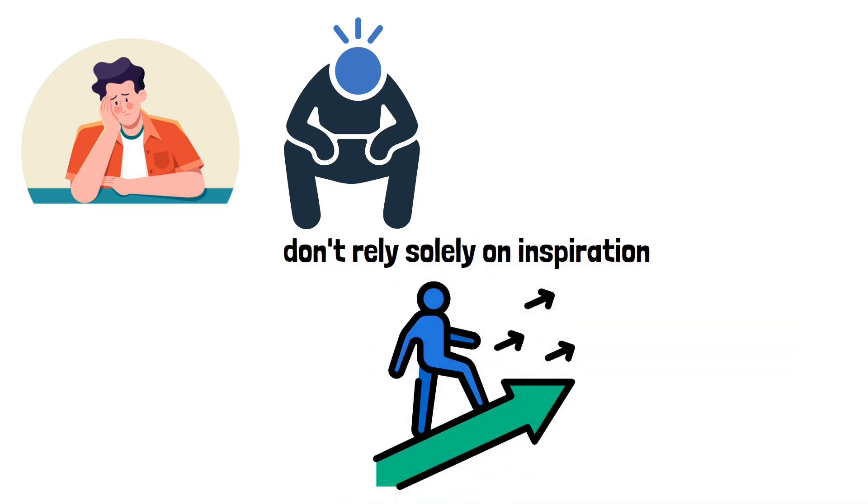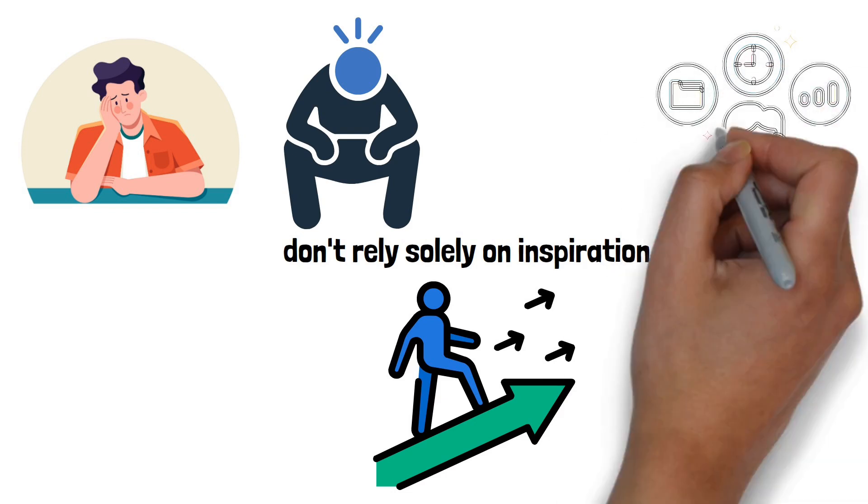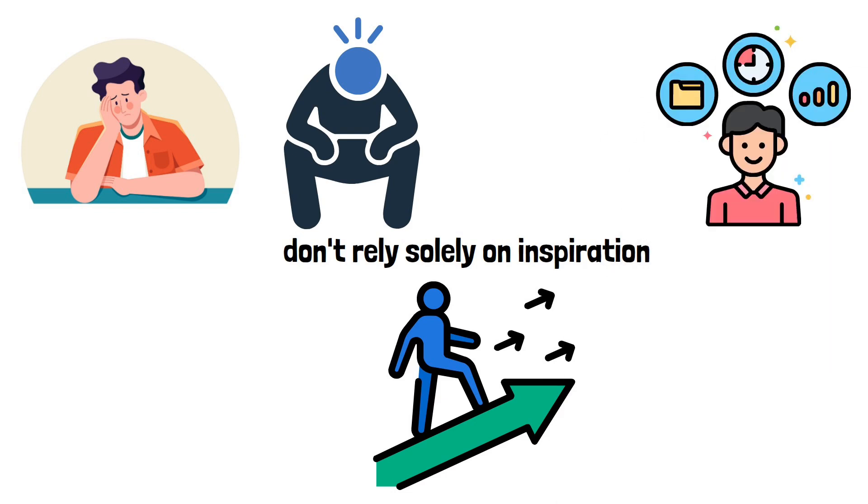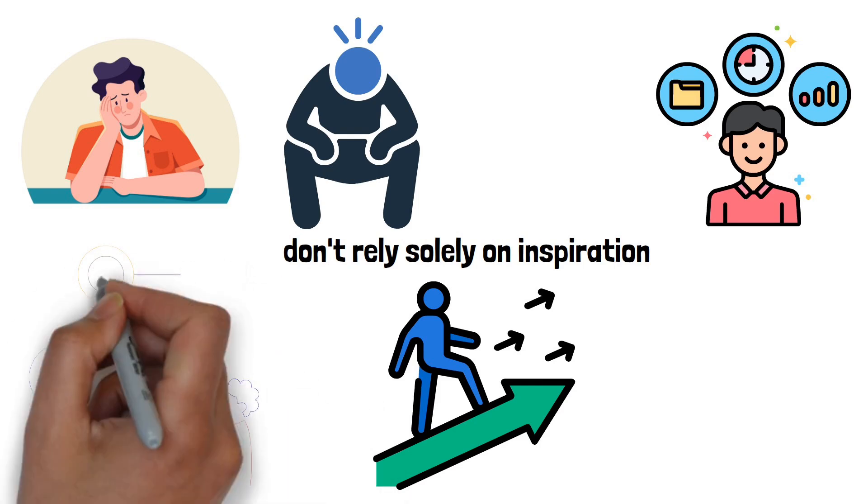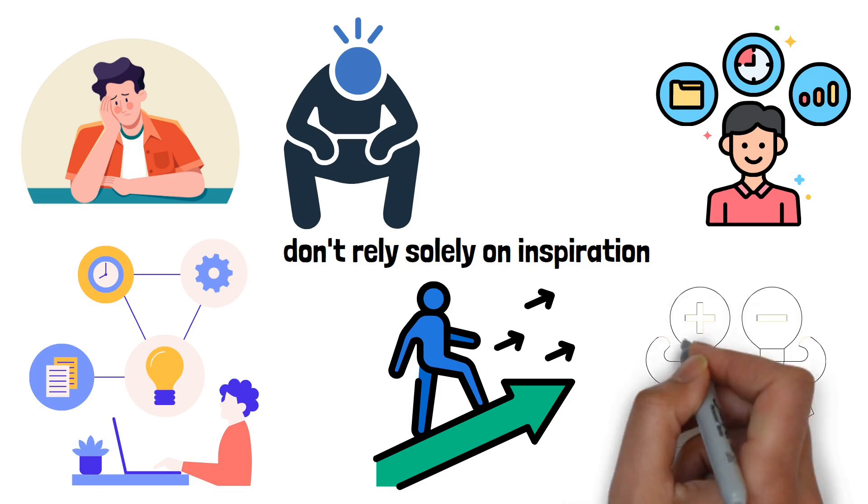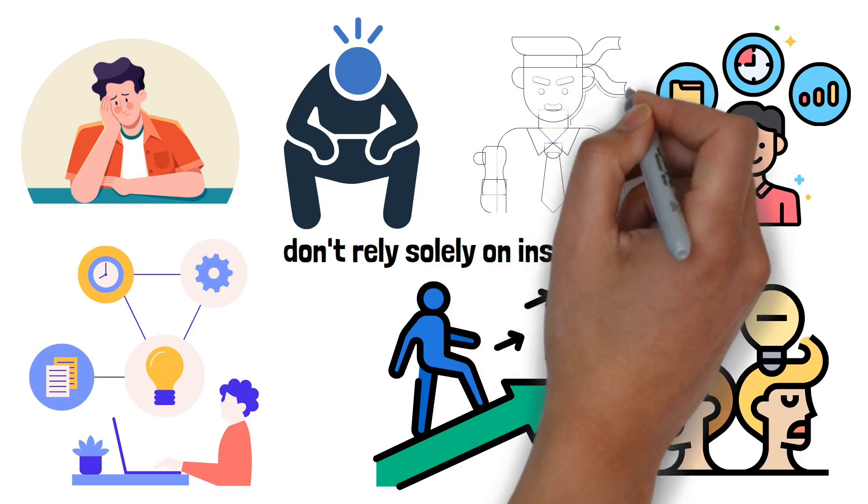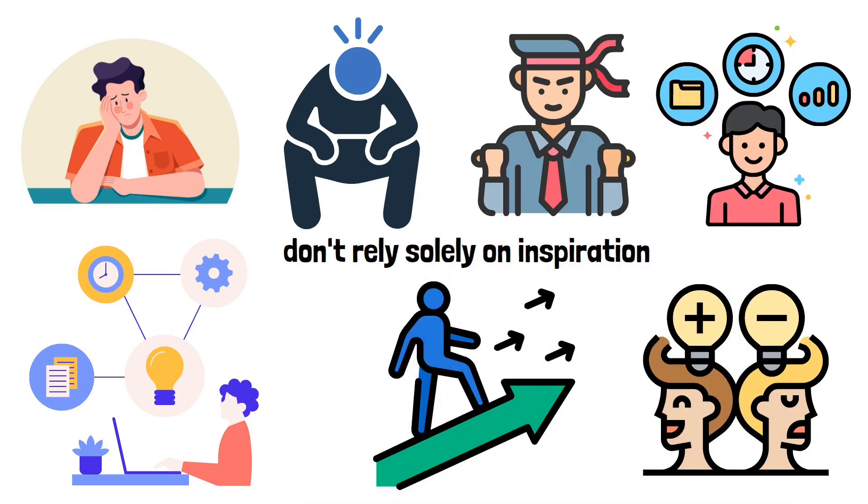Professionals also don't rely solely on inspiration. They have systems and routines that help them stay productive, even on days when inspiration is low. They treat their work with respect and give it the time and attention it deserves, treating it as a significant part of their life, not just something they do on the side. So, the difference between being a professional and an amateur isn't about skill level or success. It's about mindset and approach. It's about how seriously one takes their work and how committed they are to seeing it through, no matter what obstacles they face.